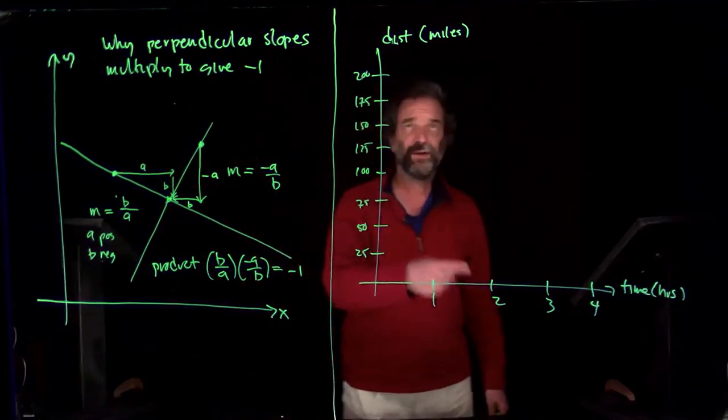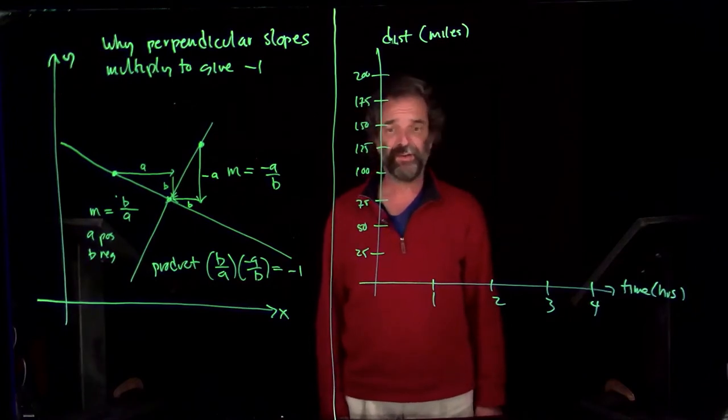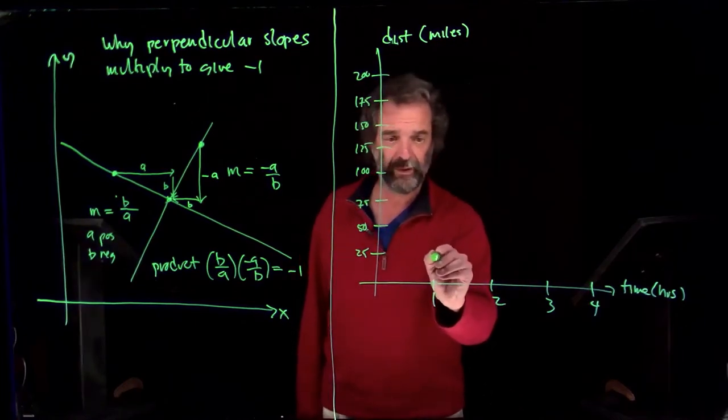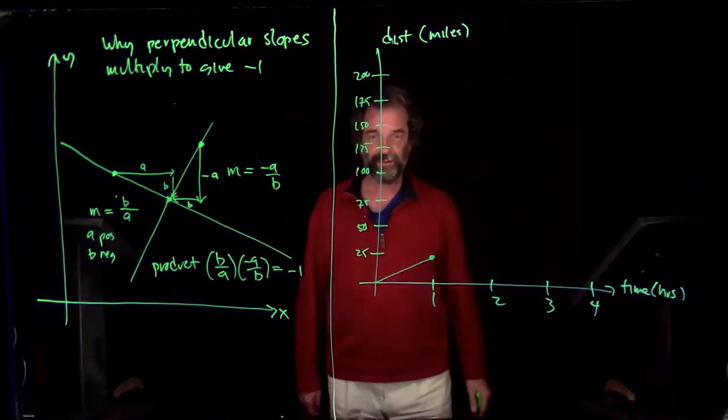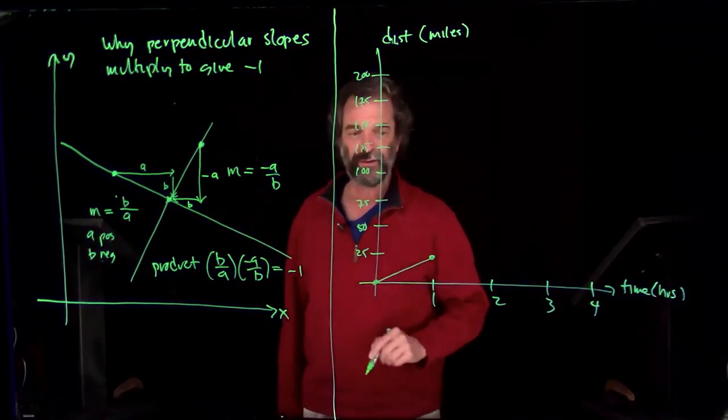Over here, we're going to look at a graph of a trip, distance versus time graph. And I'm not exactly sure where we're driving to, but this is how it looks. In the first hour, this is the zero point, you travel 25 miles.